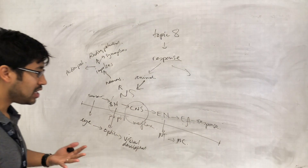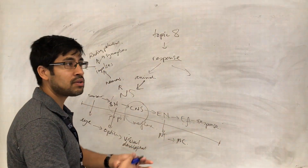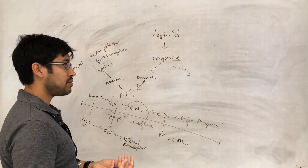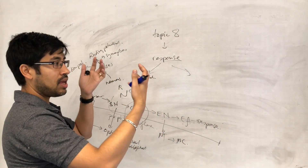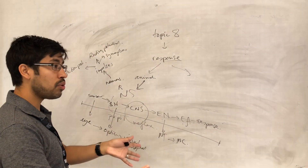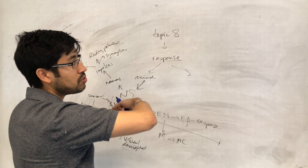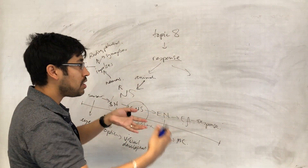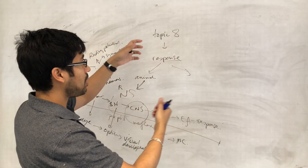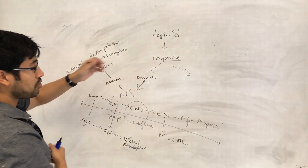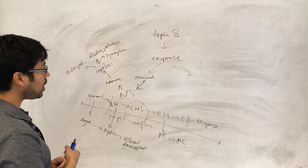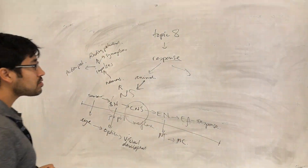Neurotransmitter binds to receptors, causing the effector cells — or the muscle cells — to depolarize. They then release calcium into the cytoplasm, causing the tropomyosin to move, causing the binding sites to be exposed, to allow the actin and myosin to interact, and causing the fibers to slide over each other.